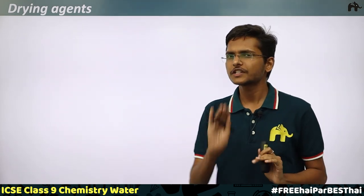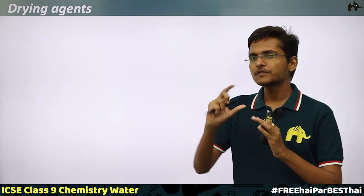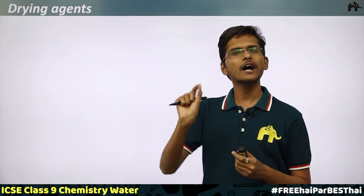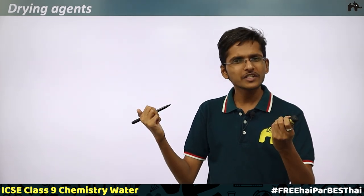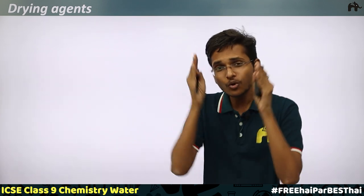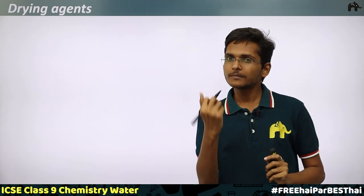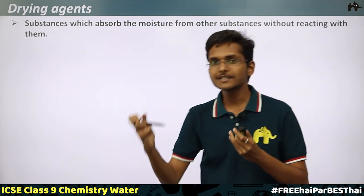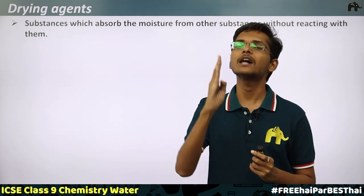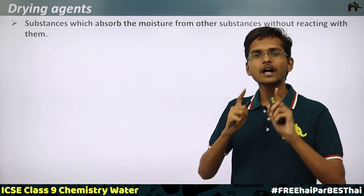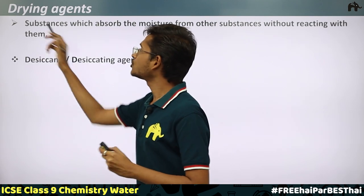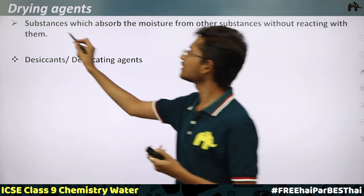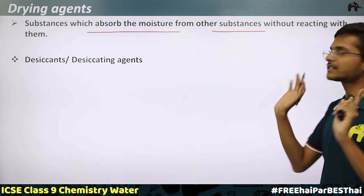Moving ahead to drying agents and dehydrating agents. For drying agents, reconnect with the concept of hygroscopy. Those hygroscopic substances which can absorb moisture — but now from other substances, without reacting with those other substances — are called drying agents. The key condition is that while absorbing moisture from another substance, the drying agent should not react with that substance.